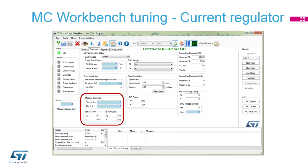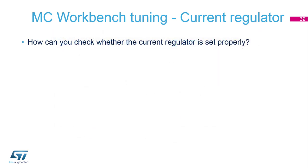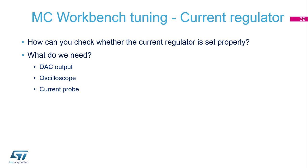You can find the current regulator in the monitor mode on the first advanced page, depicted in the red shape. To check that the current regulator is set properly, we need the DAC output as the answer, along with an oscilloscope and a current probe.